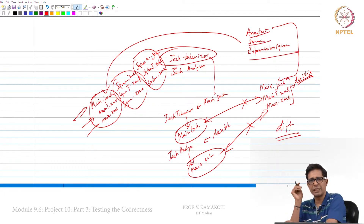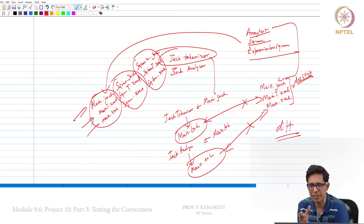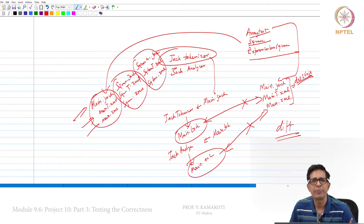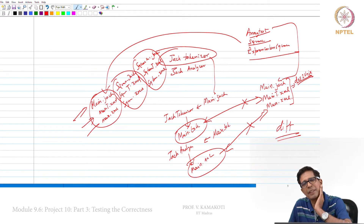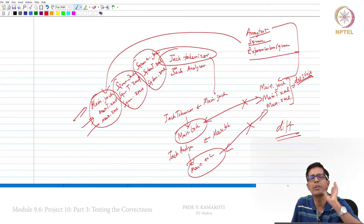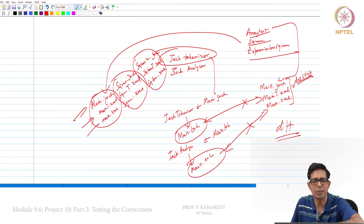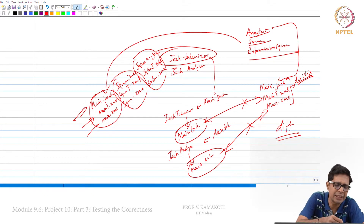If you test all three directories and the diff shows no difference, then you have your tokenizer and analyzer in proper shape. This is what is expected of you as part of Project 10. This is the front end of your compiler — you have taken the Jack representation and produced an XML representation which can be used for generating code. This XML representation is also called intermediate code.